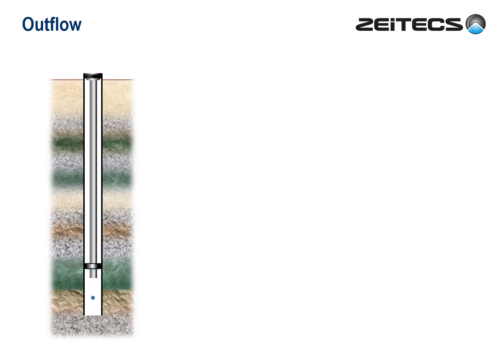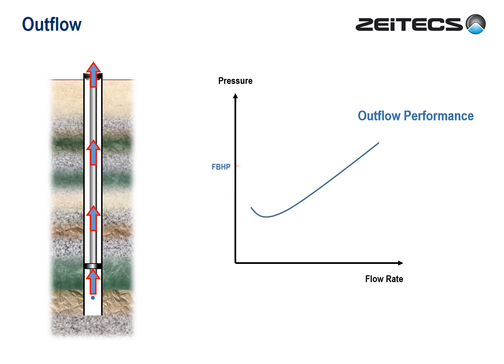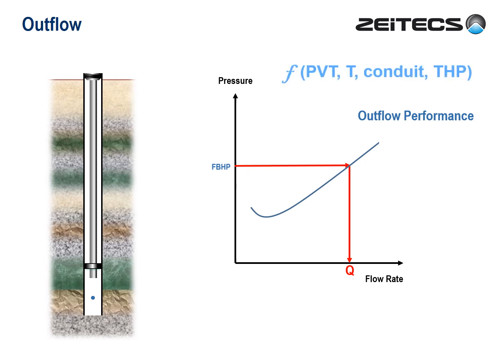So now let's complete the well and move on to outflow. Referring to the same imaginary point, a certain flowing bottom hole pressure is required to drive the fluids to surface. This is called the outflow performance of the well system. At low pressures and rates, the fluids tend to misbehave, but otherwise what we see is another very simple relationship — a certain flowing bottom hole pressure will drive fluids to surface at a certain rate. Higher flowing bottom hole pressure, higher rate. All relevant wellbore and fluid properties are built into this line: the PVT properties, the temperature profile, conduit properties, and tubing head pressure. Again, a very simple but very powerful tool.